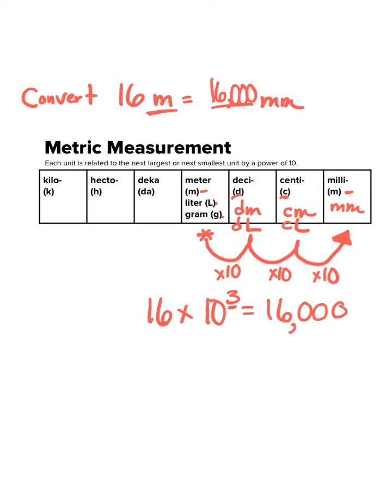So what you just want to remember is if you are going in this direction, you're going to multiply by powers of 10. If you are going in this direction, you're going to divide by powers of 10.